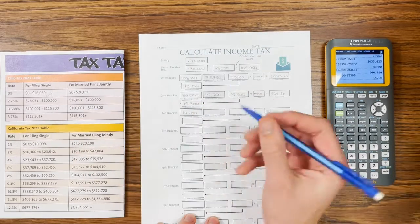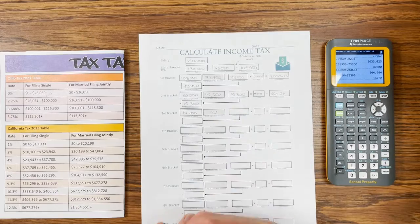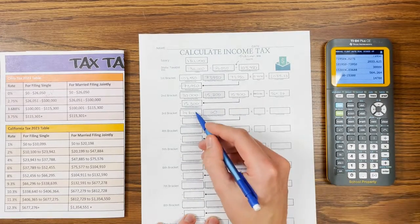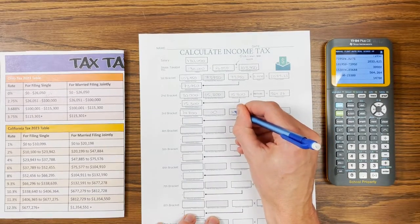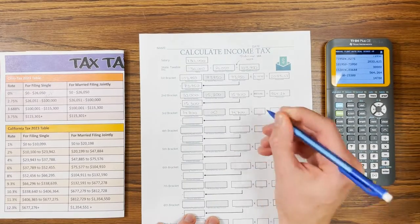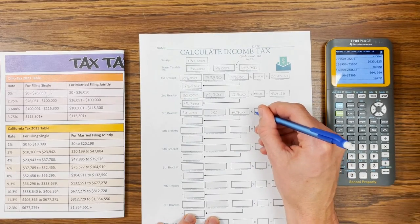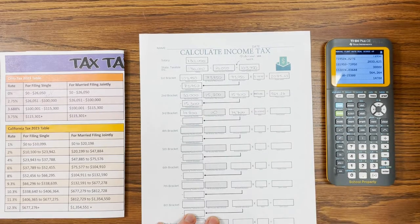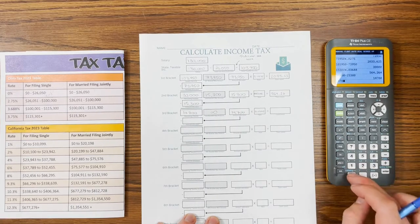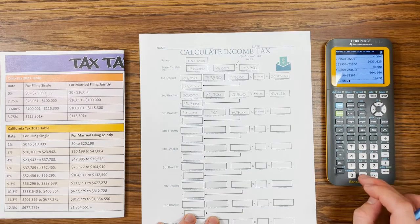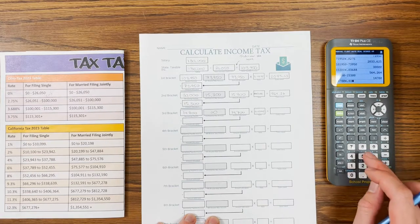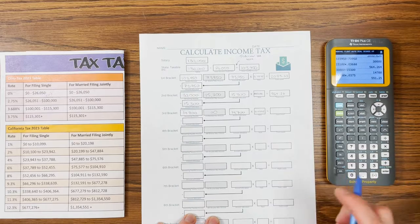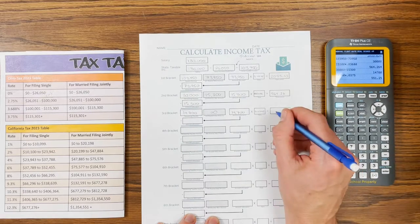This bracket, we're into the last one, is unlimited. So there's no higher bracket. Whatever's left is going to get taxed at this amount. So we put the full $14,700 in. And the rate for this one is 3.75, so 0.0375. 14,700 times 0.0375, and we get $551.25.